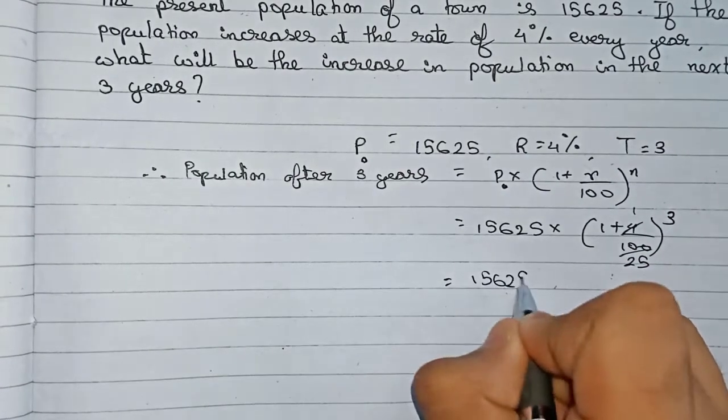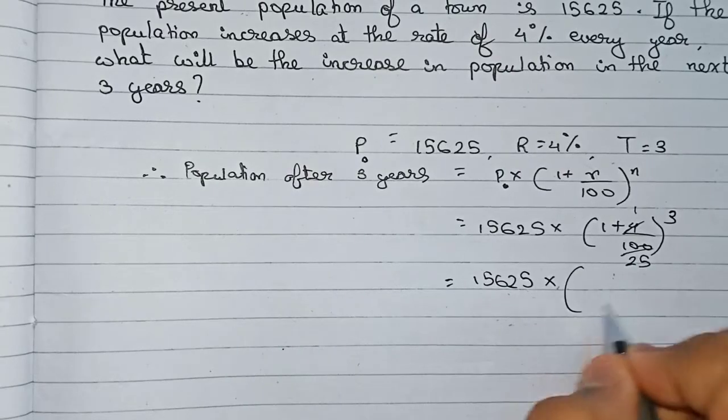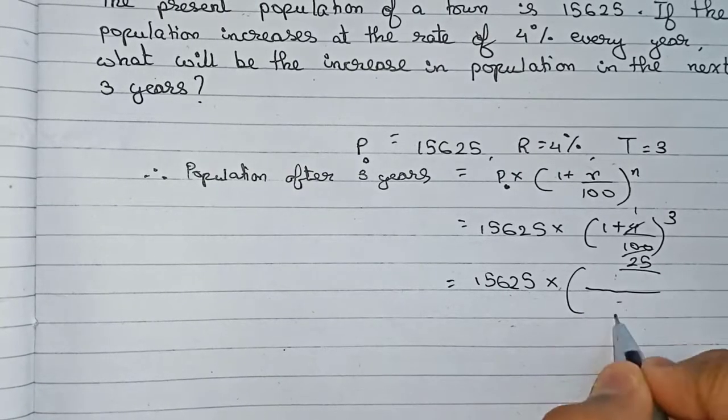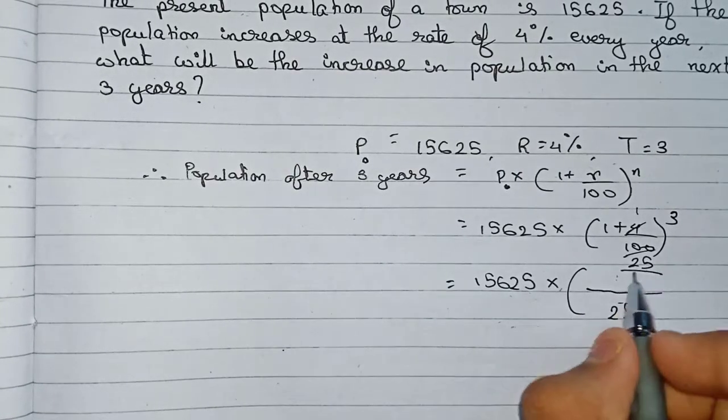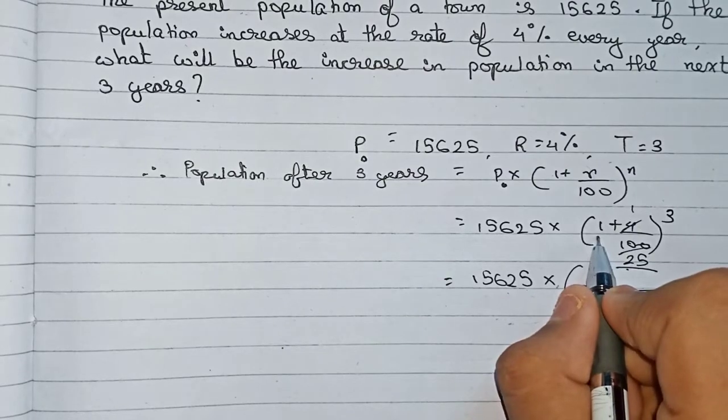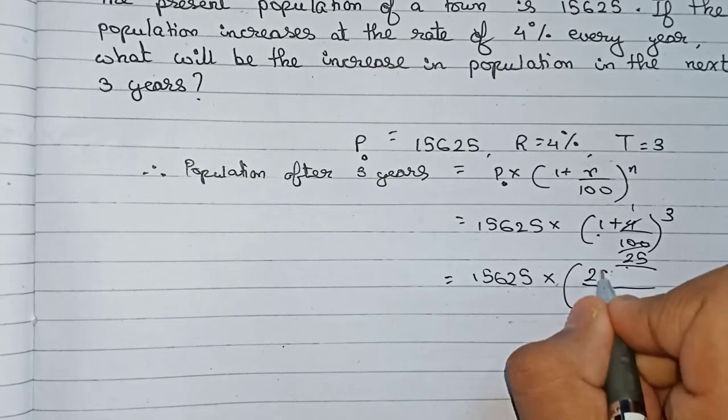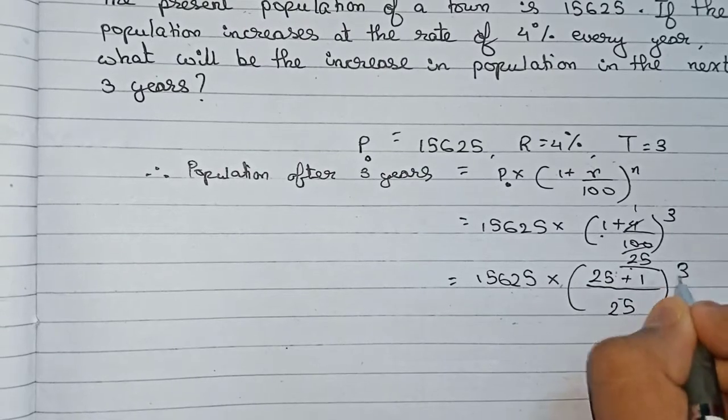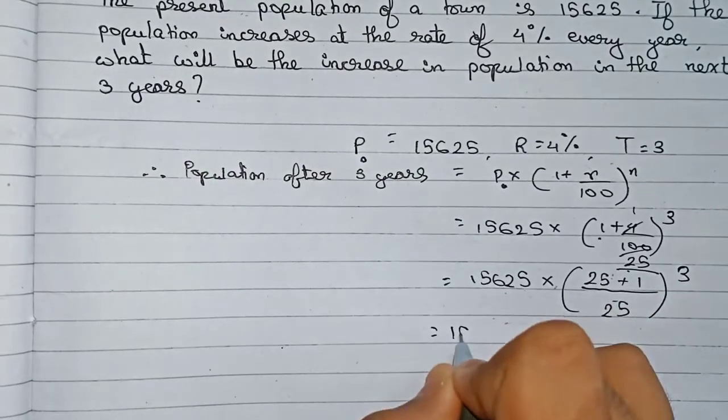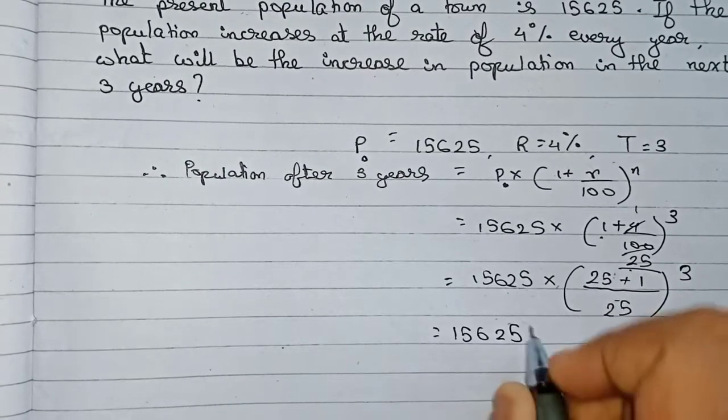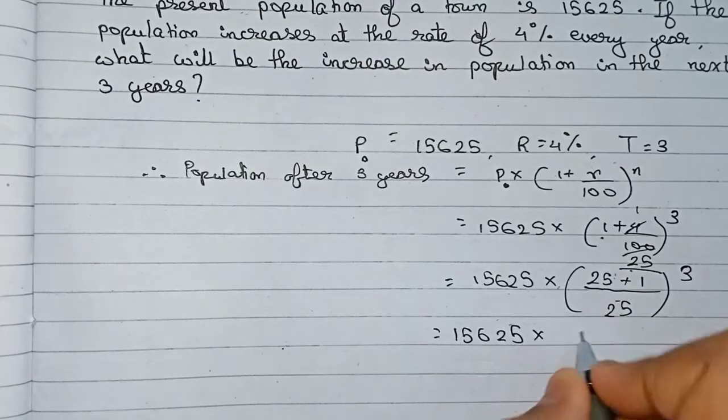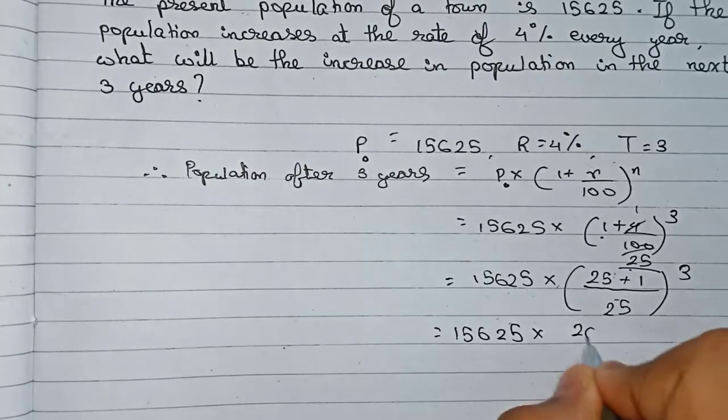So 15,625 into... this is solved now. First, take out 25 as the LCM. So now (25 + 1)/25 to the power 3. This is equal to 15,625 × (26/25).